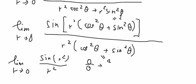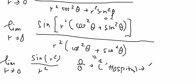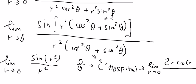So we can use L'Hôpital's rule. We take the first derivative of the numerator and the first derivative of the denominator. The derivative of sine of R squared is two R cosine of R squared, and the derivative of R squared is two R.